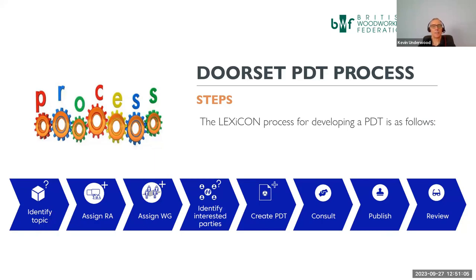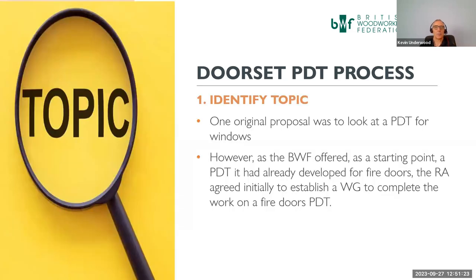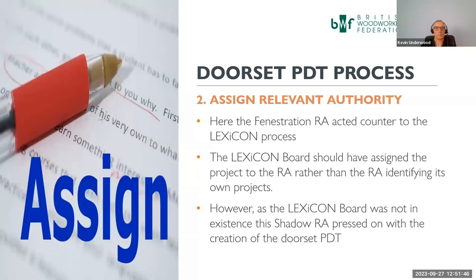Kevin Underwood: The process to develop the door set PDT followed the Lexicon process. The first stage was to identify the topic. The original proposal was to look at a PDT for windows, however the BWF had a starting point — a PDT already developed for fire doors — and the relevant authority agreed to initially establish a working group to complete work on a fire doors PDT. The Fenestration Relevant Authority acted counter to the Lexicon process here, in that the Lexicon board should have assigned the project to the relevant authority rather than the relevant authority identifying its own project. However, as the Lexicon board was not in existence, the shadow relevant authority pressed on.